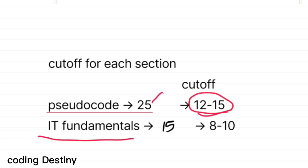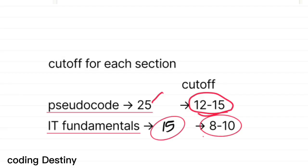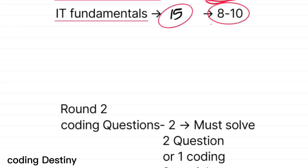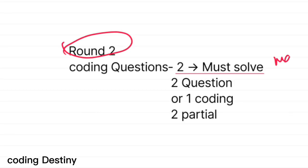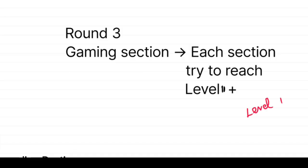Let's discuss the separate cutoffs for each session. For pseudo code, there are 25 questions and you need to solve 12 to 15 correctly. For IT Fundamentals, there are 15 questions and you need to solve 8 to 10. For the coding round, there are two questions — students advise trying to pass all test cases on the first question fully and at least partially on the second. For the gaming sessions, try to pass at least level 10 to level 11 to crack the assessment.